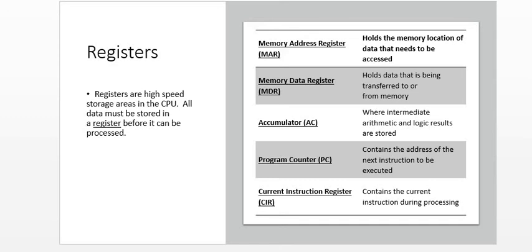The Memory Data Register holds data that is being transferred to and from memory. These registers enable the CPU to process data quickly. If the CPU had to use secondary storage — the hard drive — to store data during processing, the system would be very slow because it takes a lot of time to transfer data to and from the hard drive. So registers store data temporarily during processing, while processed data is stored on the hard drive.